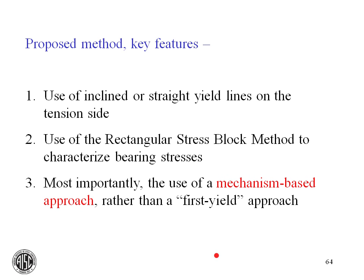Based on these findings, a slightly enhanced method is proposed. It uses the basic building blocks of Steel Design Guide 1 but strings them together to account for mechanism development in the base connection. Key differences include: using the minimum strength from either straight or inclined yield lines on the tension side (accounting for trade-offs between the two), and using a rectangular stress block — consistent with what Design Guide 1 currently provides.